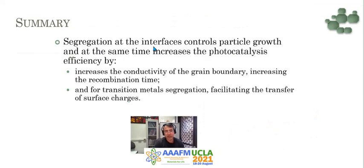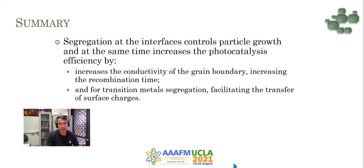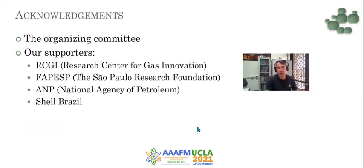In summary, segregation at the interface controls particle growth in nanoparticles, and at the same time increases photocatalysis efficiency by increasing the conductivity of grain boundaries, increasing the recombination time, and for segregation of transition metals, facilitating the transfer of surface charge for the reaction. I want to thank the organizing committee for inviting me, and our sponsors: RCGI, FAPESP, ANP, and Incial Brazil. Thank you.